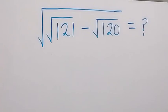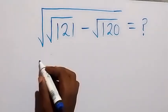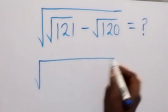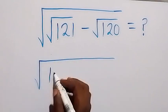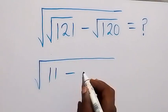Hello, you are welcome. How to solve this square root problem: we have square root of (√121 minus √120). This is the same thing as square root of (11 minus √120), since √121 equals 11.